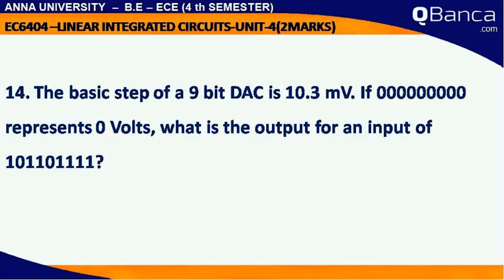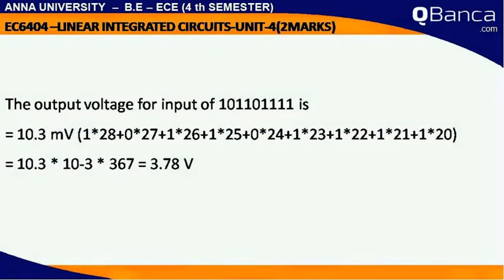What is the output for an input of 1,0,1,1,0,1,1,1? Output voltage for the input 10110111 is: 10.3 mV × (1×2^8 + 0×2^7 + 1×2^6 + 1×2^5 + 0×2^4 + 1×2^3 + 1×2^2 + 1×2^1 + 1×2^0). That is equal to 10.3 × 10^-3 × 367 = 3.78 volts.